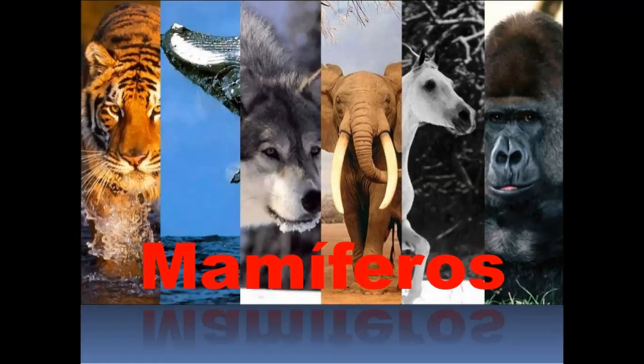As aves tinham cuidado parental: faziam ninhos, chocavam os ovos, davam alimento aos filhotes. O mamífero também, e ainda melhor, porque a mãe tem leite e glândula mamária. Então ela não precisa deixar o filhote sozinho em nenhum momento. A maioria dos mamíferos tem útero e placenta — o filhote vai se desenvolver totalmente dentro da mãe, protegido, até o estágio final de desenvolvimento. Esses são os mamíferos placentários, que é a maioria, mas existem duas exceções.